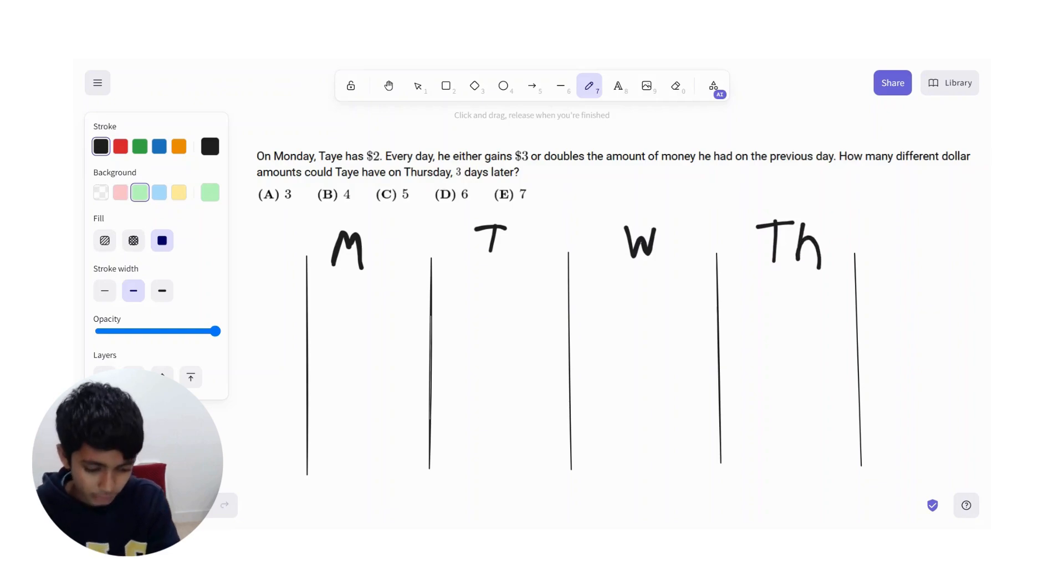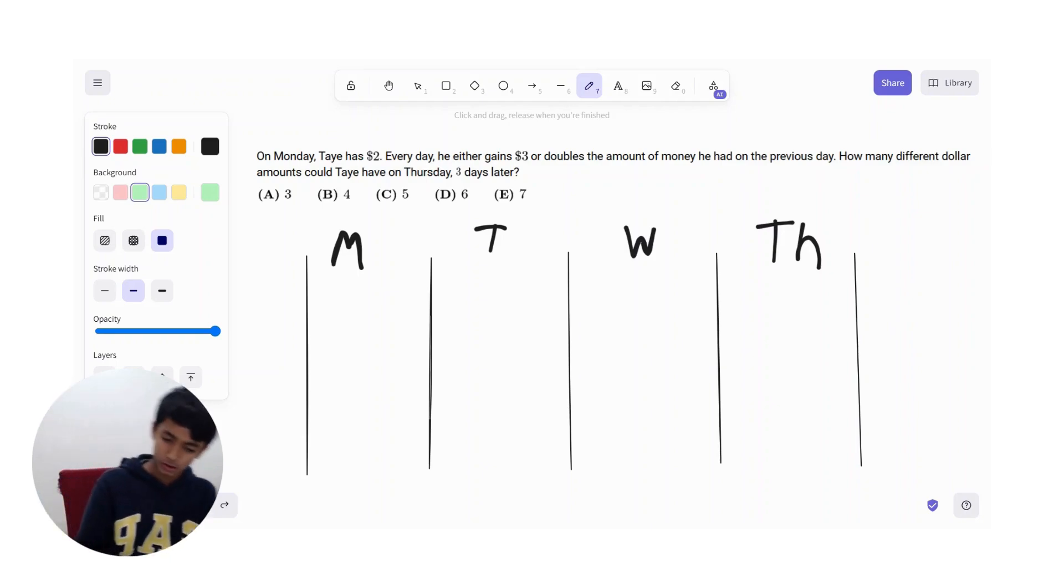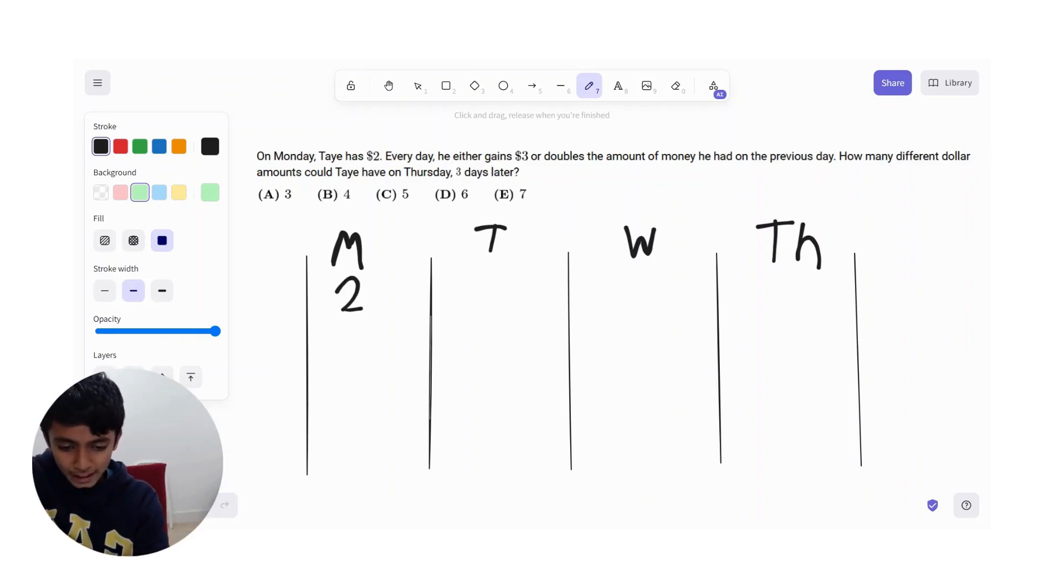And then the amount of different dollar amounts in here is going to determine our answer, okay? Okay, so we start with two. So he either gains $3, so it could be five, or double the amount of money, so four. Okay.